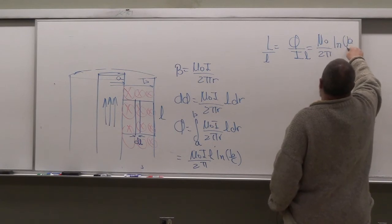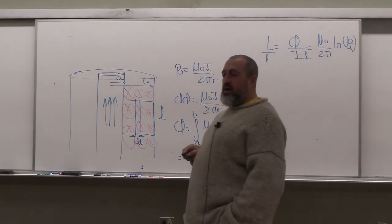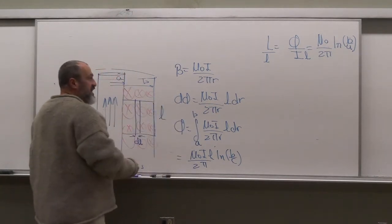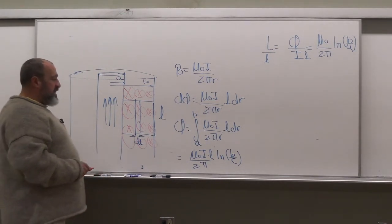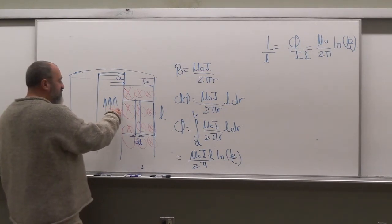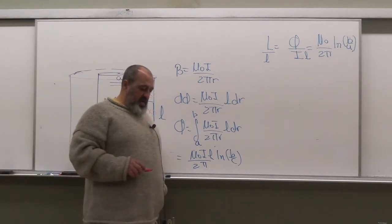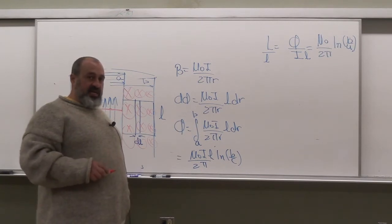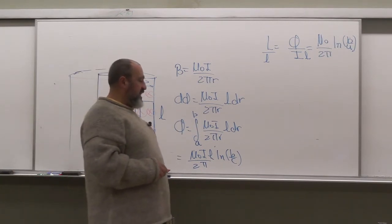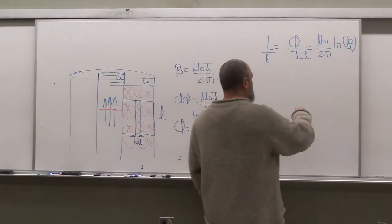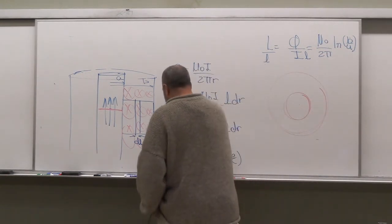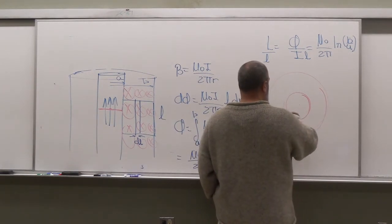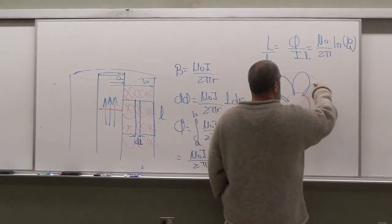So the inductance per unit length of the coax cable is (μ₀ / 2π) · ln(b/a) — straightforward. I'll post a discussion on calculating the inductance of the inner conductor itself, which connects to flux linkage and is a really interesting problem. Another exercise: can you calculate the inductance of a toroid?